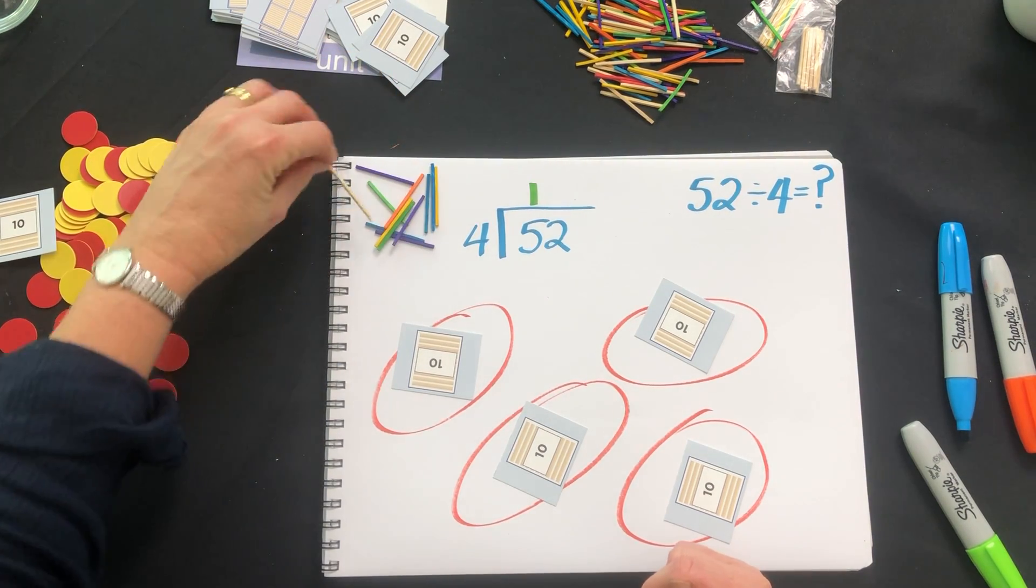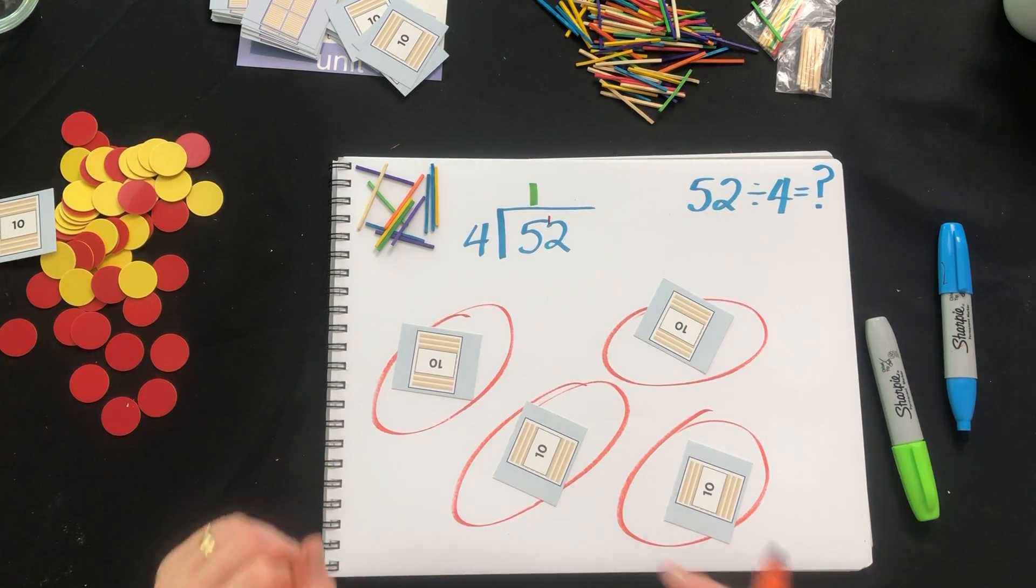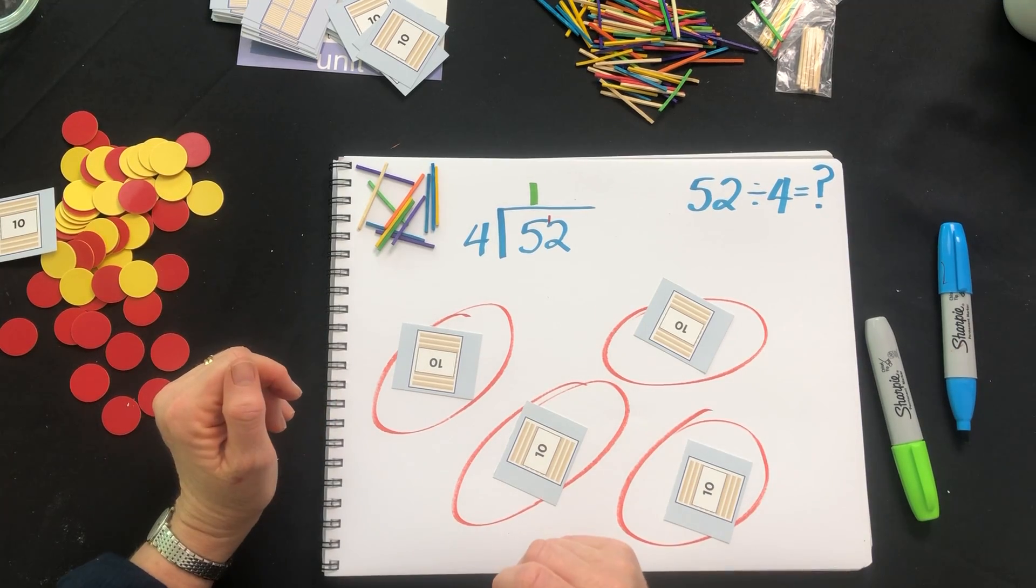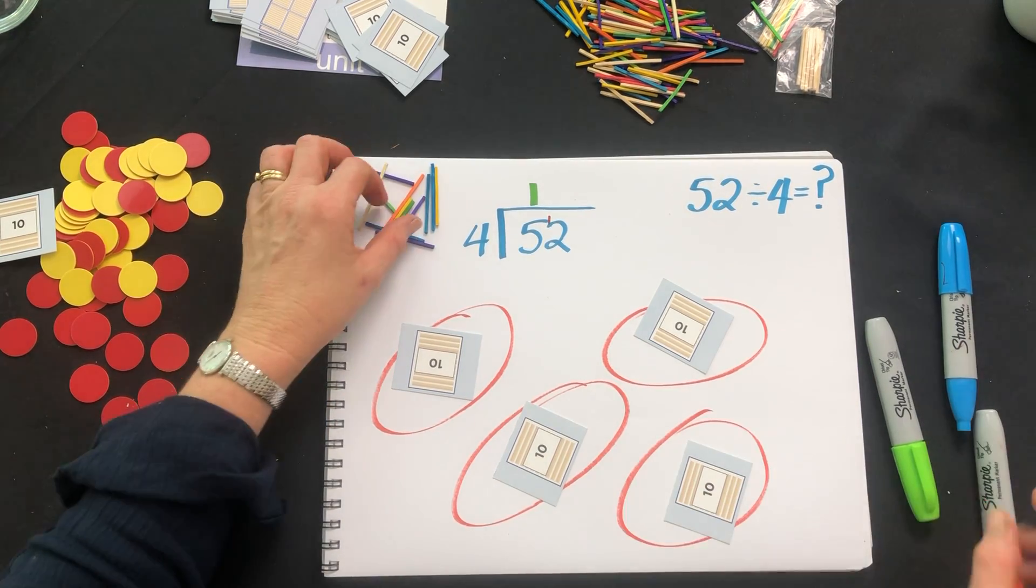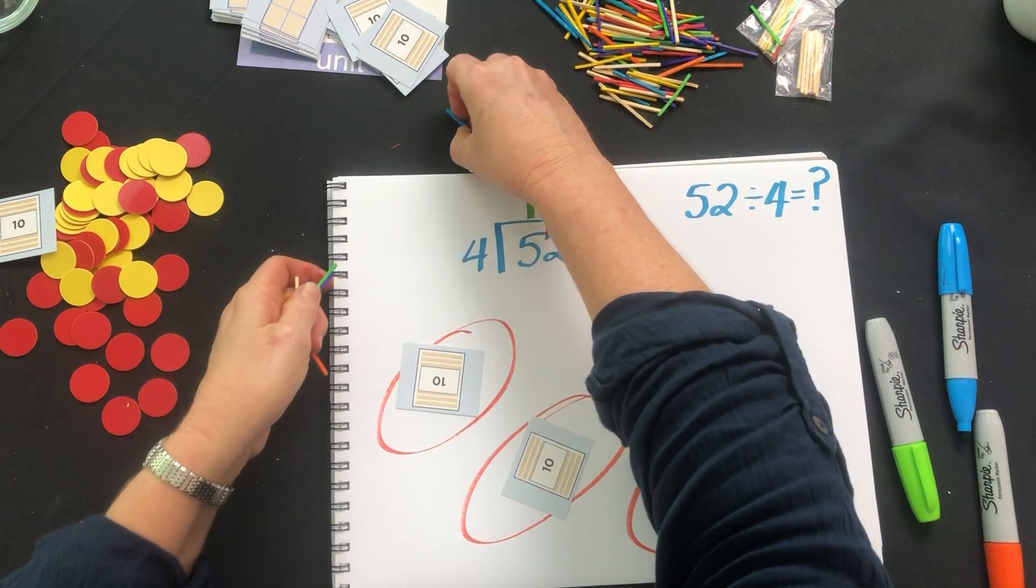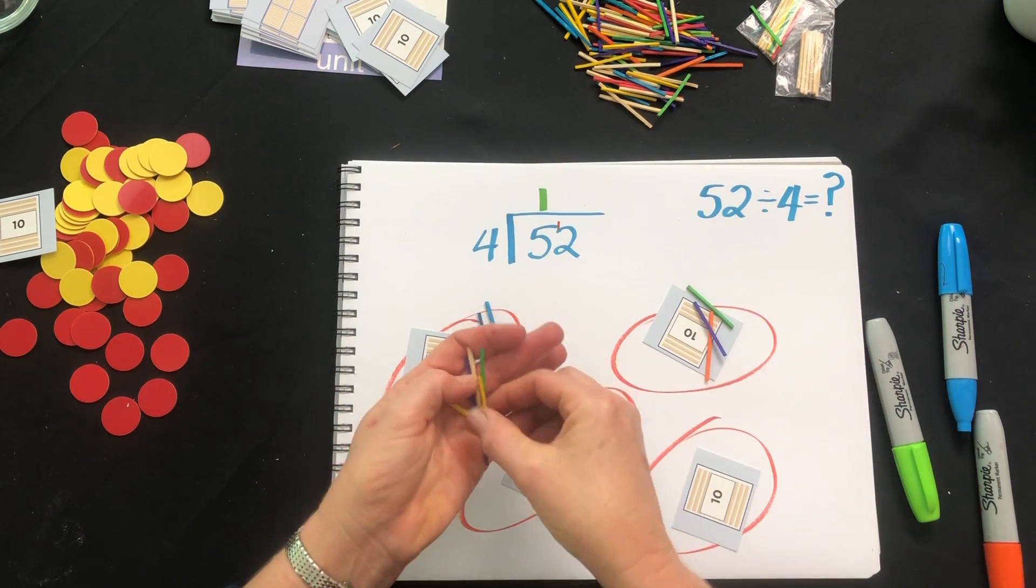So now what I have is 12 ones and I put the one there to show that it's 12 ones. Now we need to share those 12 ones into four groups and each group will get three.